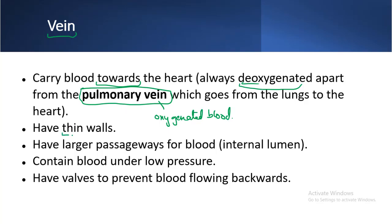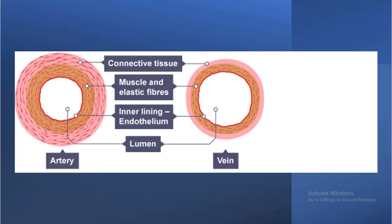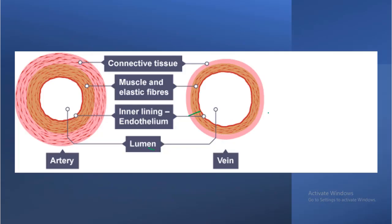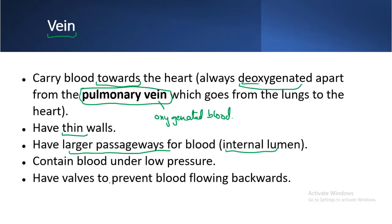Veins have thin walls, as we can clearly see in this diagram. They have a large passageway — a large internal lumen — compared to the artery. Veins contain blood under low pressure, because as blood returns from the body back to the heart, there is no strong force pushing it.